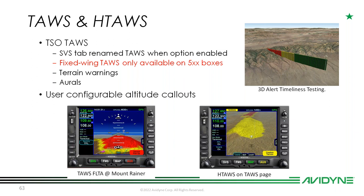In those IFDs with TAWS, the SBS tab that was part of your map system is renamed to 'TAWS.' If you've seen this at our shows, the SBS tab is gone and a TAWS page appears, showing all those TAWS products. Important to note: fixed-wing TAWS is only available on Five Series boxes due to available outputs on a Five versus Four Series. No TAWS on Four Series boxes — but everyone still has FLTA, which is included in all IFDs and hasn't gone away.